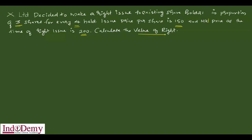We want to find out the value of right. The value of right is equal to number of new shares divided by total number of all shares, multiplied by market price minus issue price.